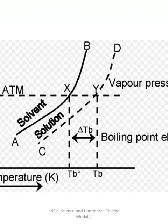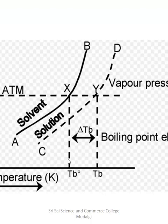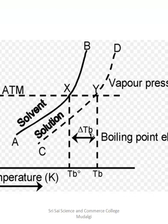To repeat: the graph has vapor pressure on the y-axis and temperature on the x-axis. The boiling point is defined as the temperature at which vapor pressure equals atmospheric pressure. Since there is a non-volatile solute in the solution, the vapor pressure of the solution (curve CD) lies below that of the pure solvent (curve AB) at all temperatures. The difference in temperatures — that is, the boiling point of solution minus the boiling point of solvent — is ΔTb, elevation in boiling point. This graphical representation has also been asked in board examinations, so students must remember it.